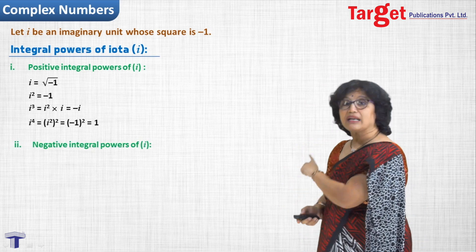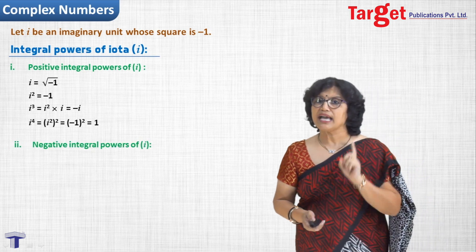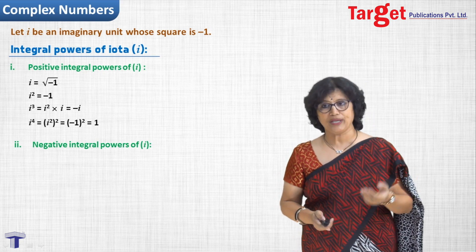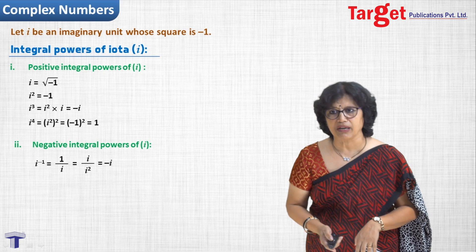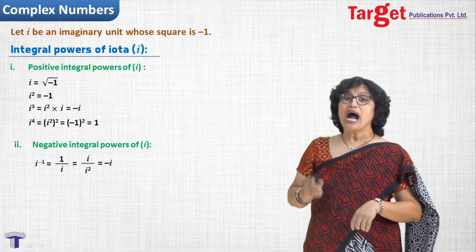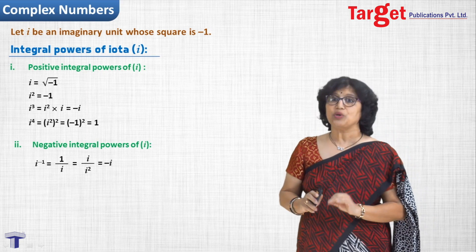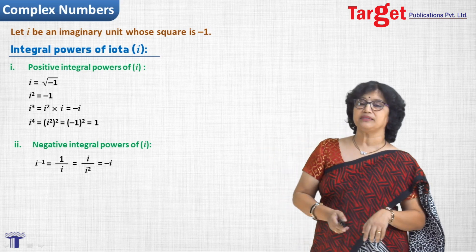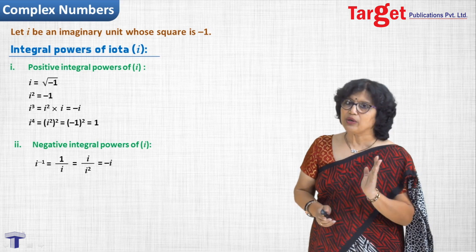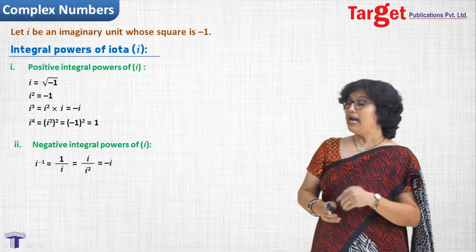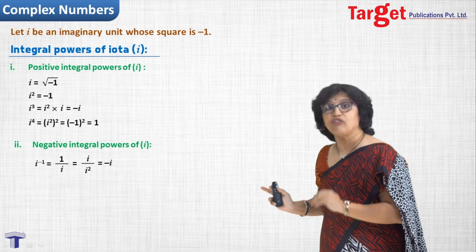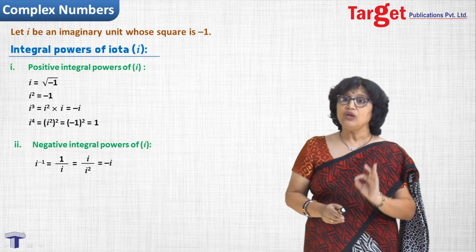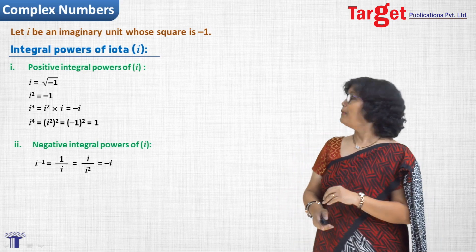Now let us check the negative integral powers of i — that is, powers like 1 upon i, 1 upon i squared, 1 upon i cubed, etc. For 1 upon i, since i in the denominator troubles us, we multiply and divide by i, getting i squared in the denominator. Replacing i squared by minus 1, we get rid of i from the denominator and the answer for 1 upon i turns out to be minus i.